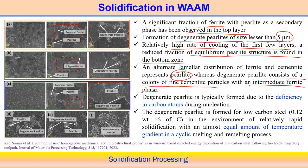Degenerate pearlite is typically formed due to deficiency of carbon — in this case, the low carbon steel has only about 0.128% carbon. With this condition, it is possible to develop degenerate pearlite structure during wire arc additive manufacturing. It is believed this structure forms because of the particular trochoidal tool path being followed.